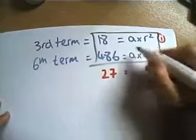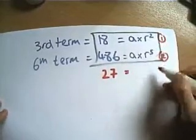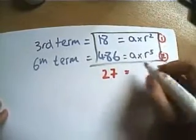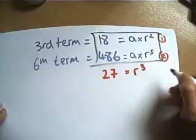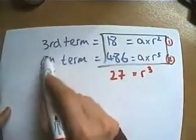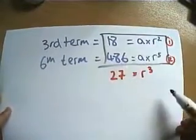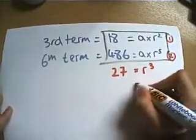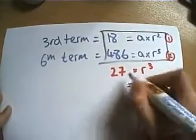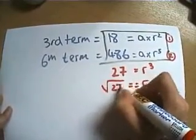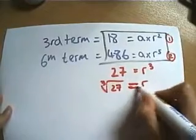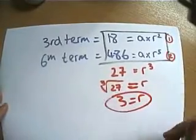And if I do this divided by this, a divided by a, well that disappears. R to the 5 divided by r squared is r cubed. If you think about it, these are three terms apart, so we must have timesed it by r cubed to get from here to here. So we now know that r cubed is 27, and therefore r must be the cube root of 27. So r must equal 3.